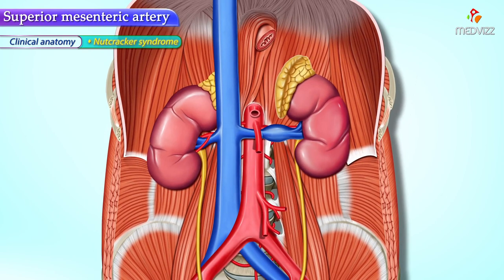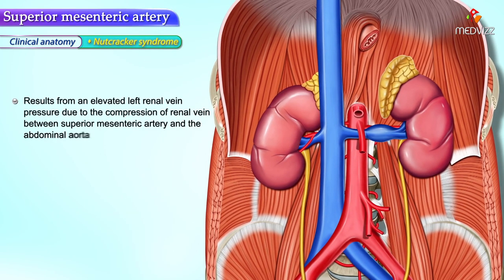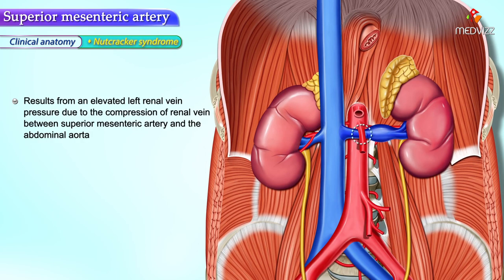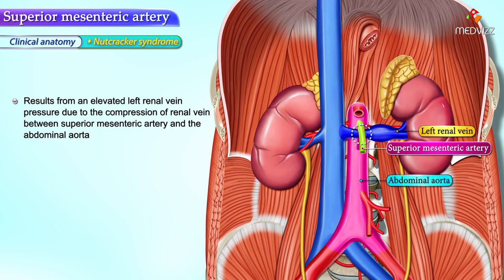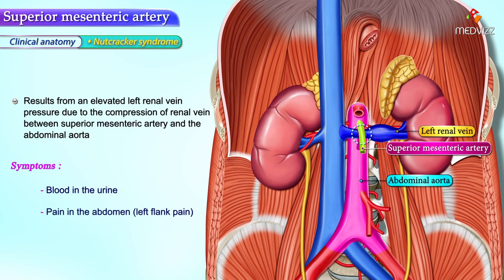Nutcracker syndrome results from elevated left renal vein pressure due to compression of the renal vein between the superior mesenteric artery and the abdominal aorta. Symptoms include blood in the urine and abdominal pain, which is usually left flank pain.